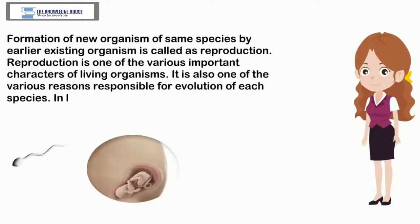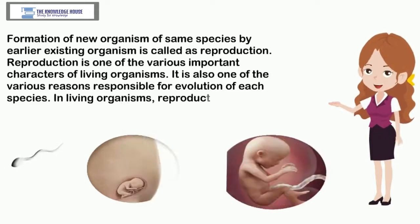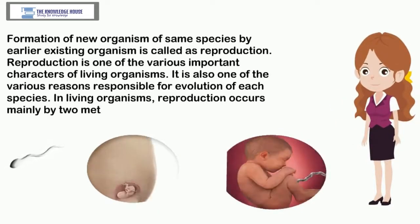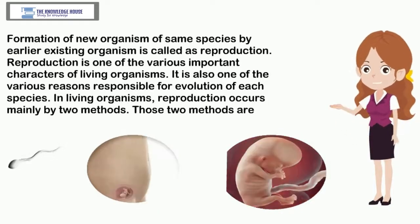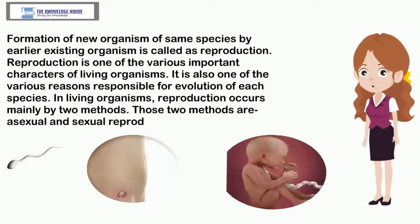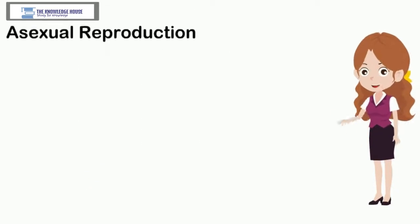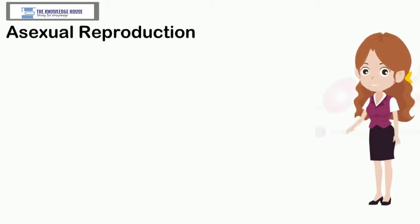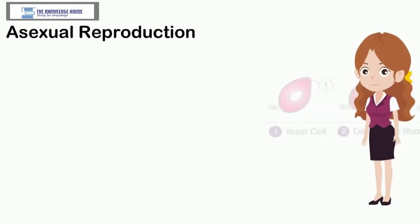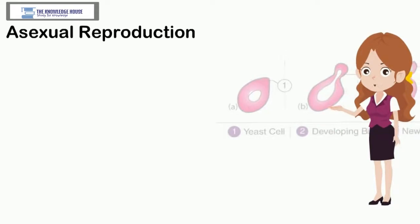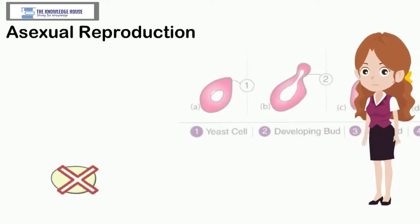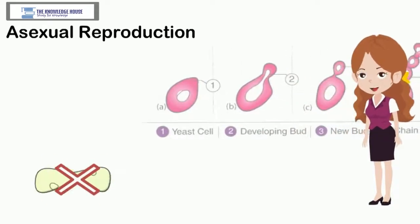In living organisms, reproduction occurs mainly by two methods. Those two methods are asexual and sexual reproduction. Process of formation of new organism by an organism of same species without involvement of gametes is called asexual reproduction.